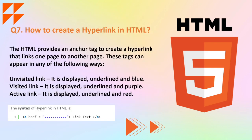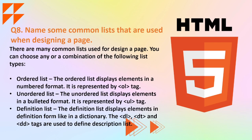Moving on to the next question: how do you create a hyperlink in HTML? HTML provides an anchor tag to create hyperlinks that link one page to another. These links can appear in any of the following states: unvisited link — displayed with underline and blue; visited link — displayed with underline and purple; and active link — displayed with underline and red. We mention the hyperlink using the anchor tag, and inside the href attribute we mention the HTML hyperlink.